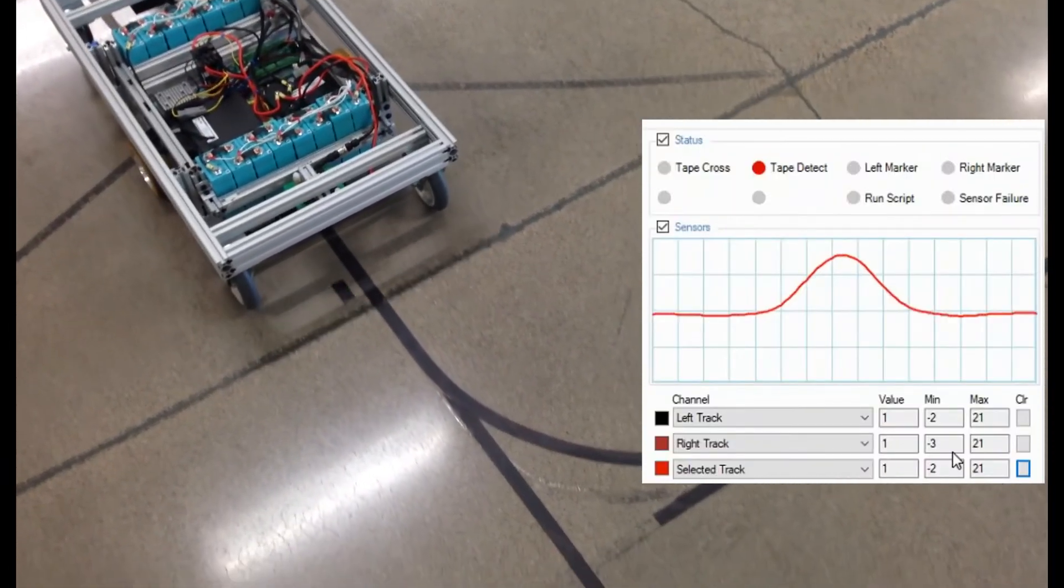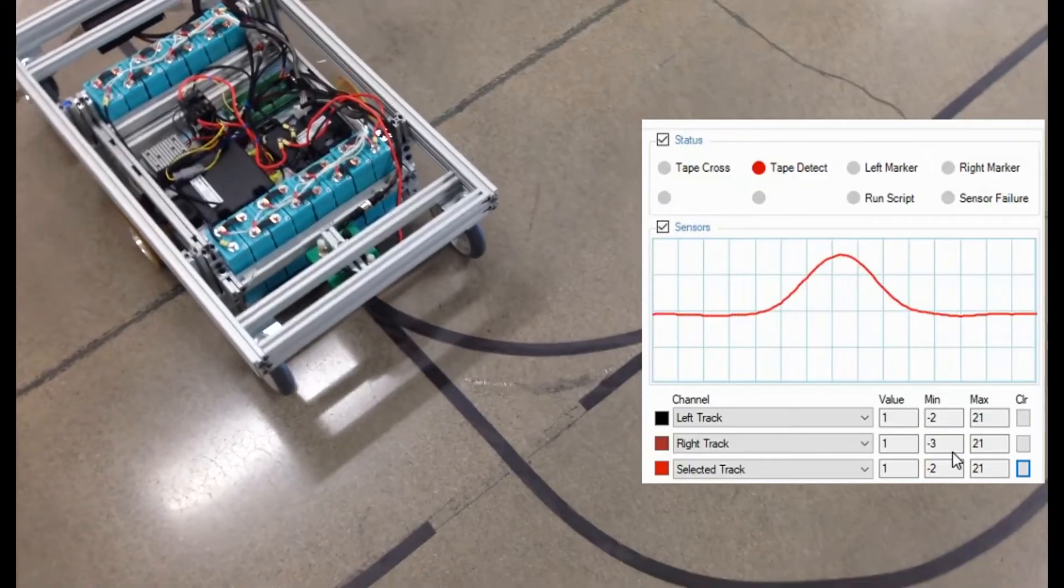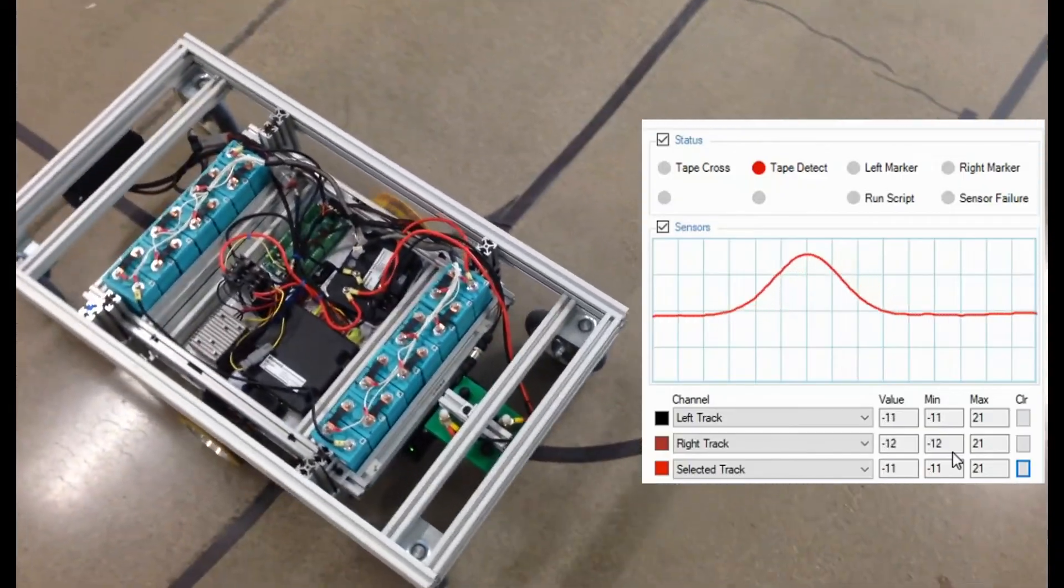For troubleshooting, the track's magnetic field can be visualized in real time on a PC connected to the sensor's USB port.